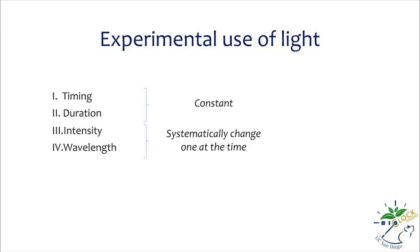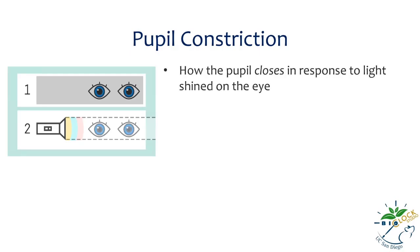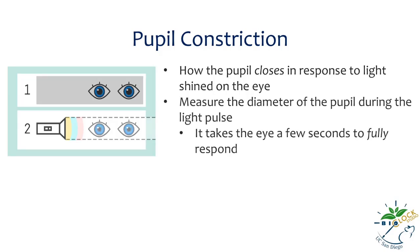So how do we test sensitivity for different wavelengths? In mammals, a common response to light is pupil constriction, which refers to the pupil closing in response to light shined on the eye. To measure this response, the diameter of the individual's pupil is measured during the administration of a light pulse. After the light is turned on, it takes the eye a few seconds to fully respond. When the pupil stabilizes, the diameter can be measured, and the degree of constriction as a result of the light pulse is calculated from those measurements.